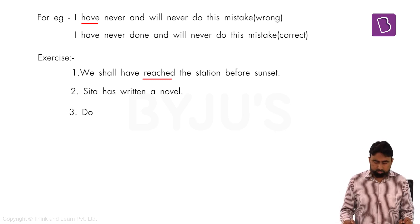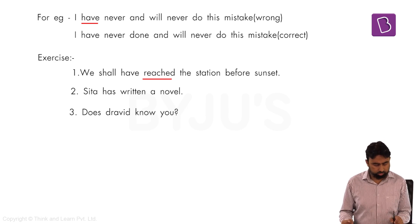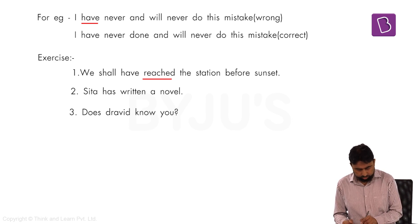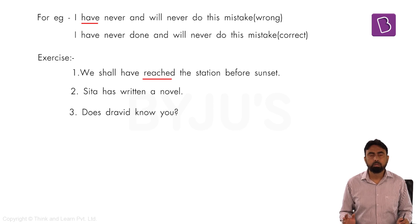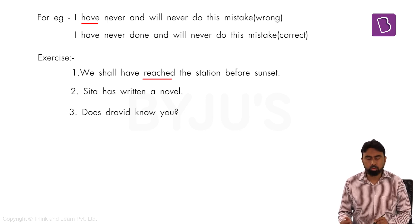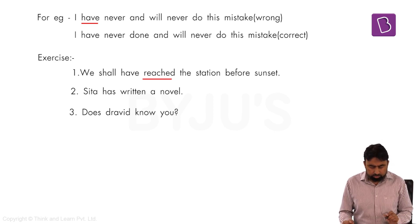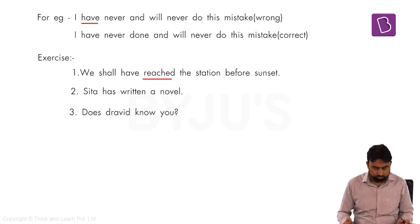Moving to the third problem: '___ Dravid know you?' Options: A) does, B) do, C) is, D) has. 'Has' can't be used because after 'has' the third form of the verb is needed, but 'know' is first form. 'Is Dravid know you?' — we don't use 'is' with a main verb in simple present. So options narrow to A or B — do or does. Dravid is a singular subject (one person's name), so the singular helping verb 'does' is correct: 'Does Dravid know you?' We use 'do' with plural subjects and I/you/we/they.